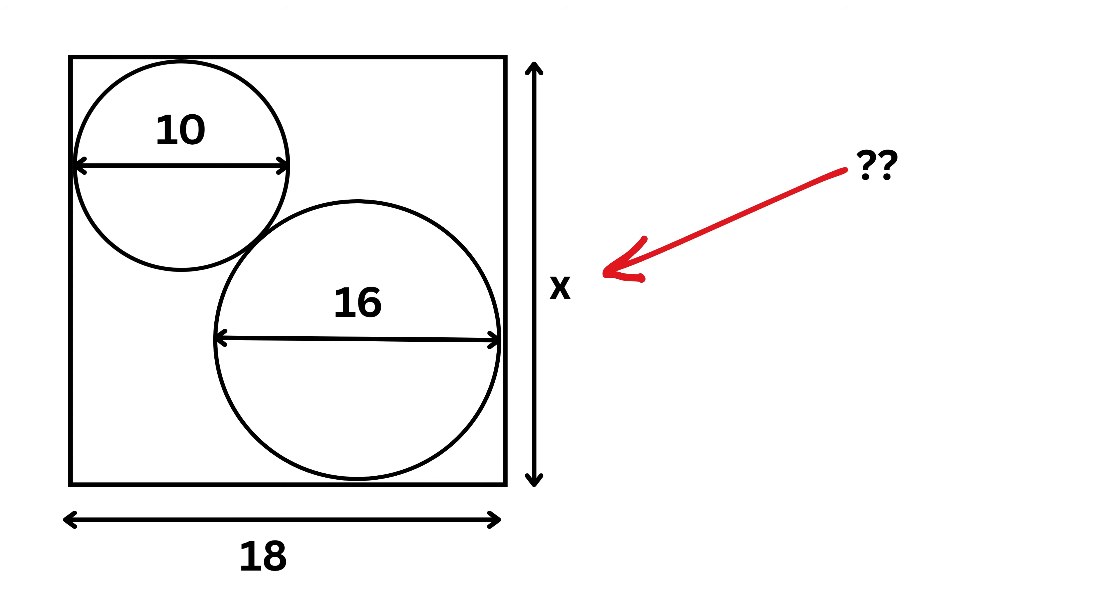What will be the value of x? The radius of this circle will be 5 and that of this circle will be 8 units. Now from the center of this circle, drop a vertical line on this side of the rectangle. Do the same for this center. Therefore, this is equal to 5 units. And if this is 8, then this is also equal to 8 units.